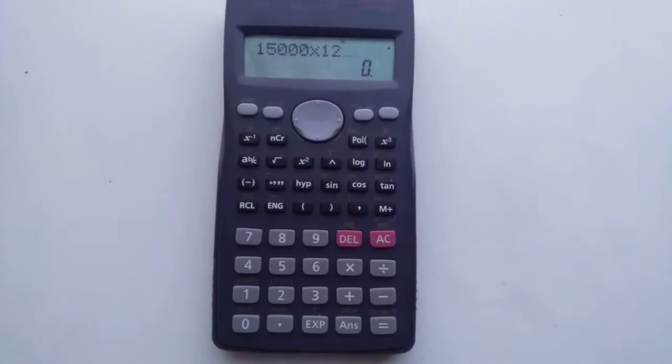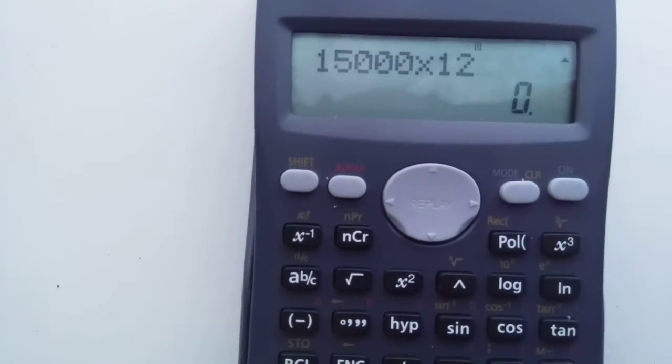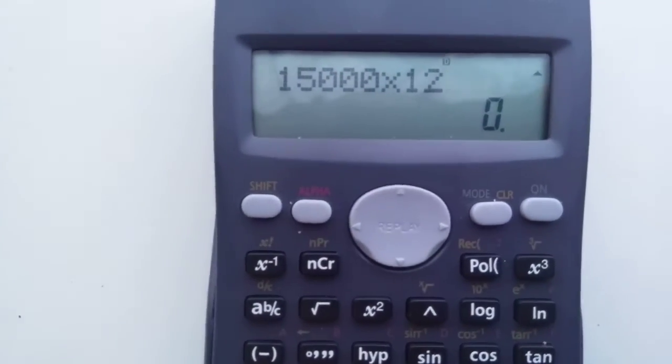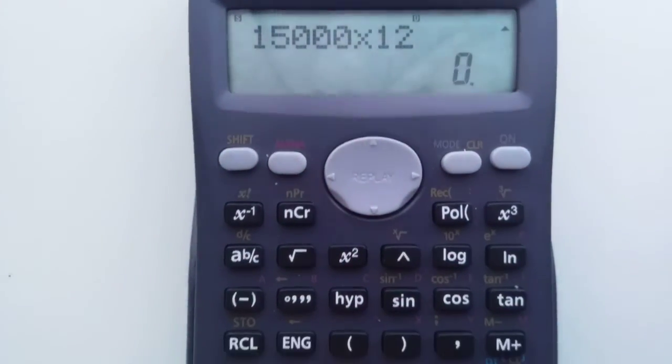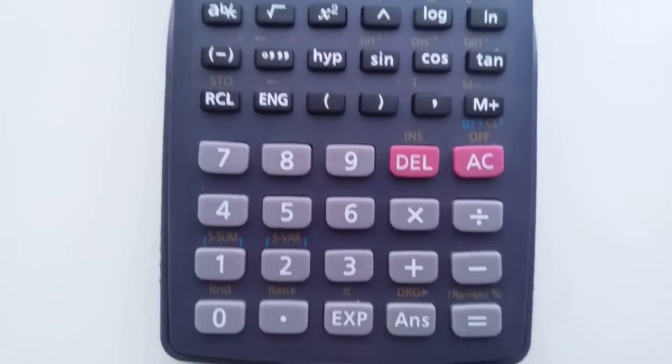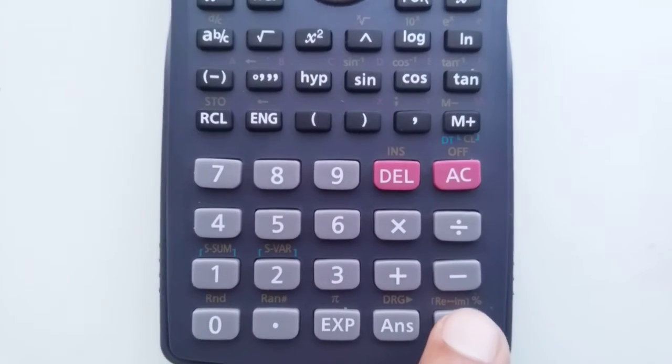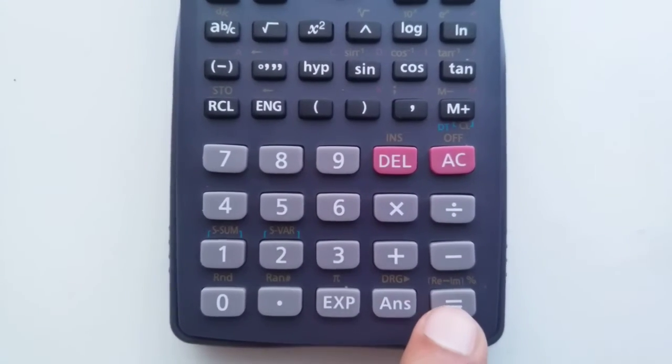Then what you have to do, the next button you have to press, as you can see I will zoom, you have to press this shift button and then you have to come down here and you have to press this equals button. You see here percentage, you have to press this.